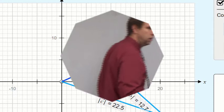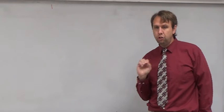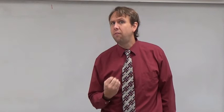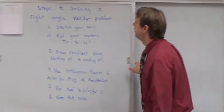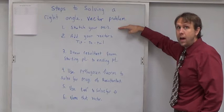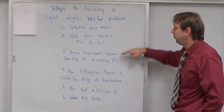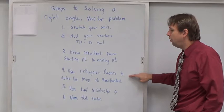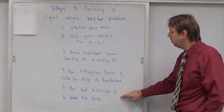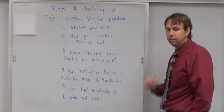Often, we're going to see problems that are in a very special case when our vectors make a right angle. If our vectors make a right angle, we can follow a few simple steps to solve those. Steps to solving a right angle vector problem: Sketch your axis. Add your vectors tip to tail. Draw the resultant from the starting point to the ending point. Use the Pythagorean theorem to solve for the magnitude of the resultant. Use the inverse tangent to solve for the angle. Then you name the vector. Six simple steps.